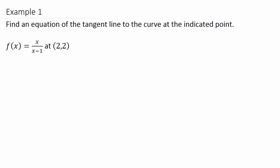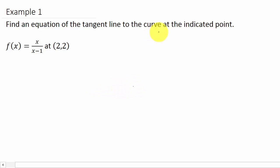In this video we're going to talk about finding the tangent line to a curve. It says find an equation of the tangent line to the curve at the indicated point. We have our function f(x) equals x over x minus 1, and we want to find the equation of the tangent line at the point (2, 2).